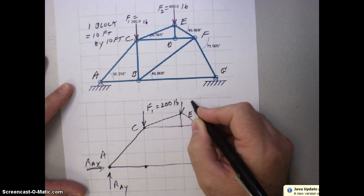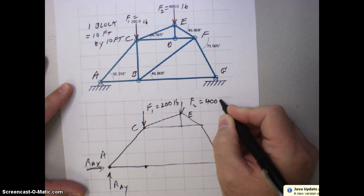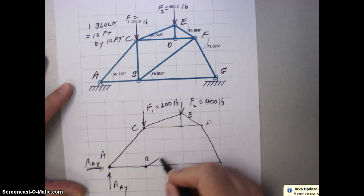Right here at E, I've got a force, F2, that's 400 pounds. And that's F, that was B, I told you. Go ahead and finish this, drawing this.